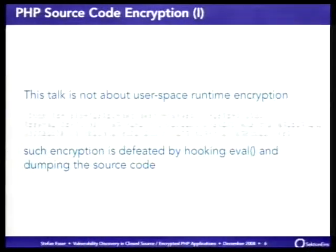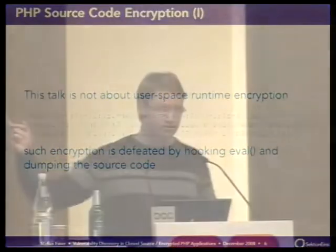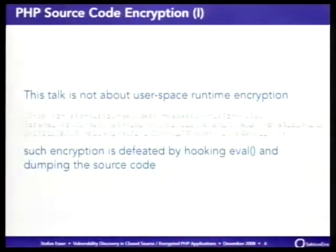When I speak about encrypted PHP applications, I don't mean simple obfuscation like creating obfuscated PHP code that calls base64_decode to decode a string and then evaluates it. This kind of protection is easily defeated by hooking the eval function — you just output the parameter instead of executing it and get the original source code back. Maybe you need to step through several layers, but usually you get the original source code, so this is not really a protection.